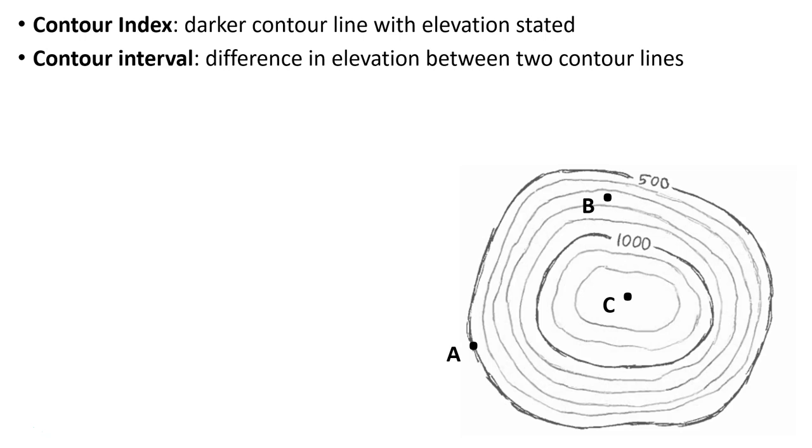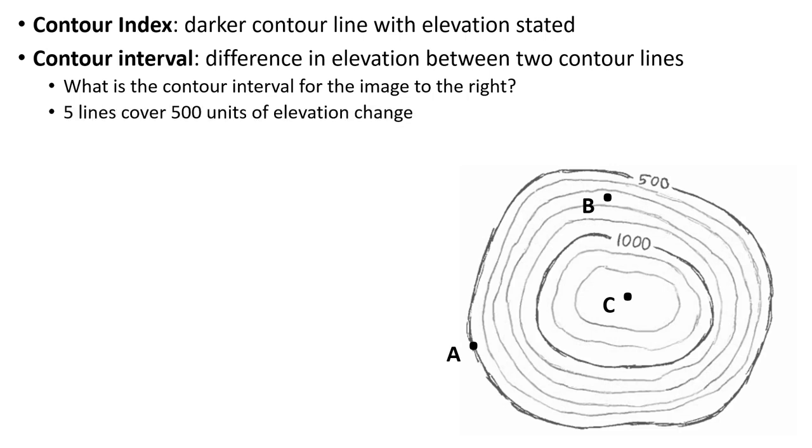Just a reminder that oftentimes, maybe on an actual map this may be stated, but on the exam, what you may have to do is identify what the actual contour interval is that we're seeing. For example, we can figure out what this contour interval is for this image by noting that there are five lines that cover 500 units of elevation change. Whether that's meters or feet, in this case it doesn't really matter.